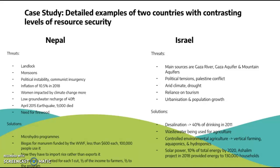For Israel: main water sources are the Gaza River, Gaza Aquifer, and mountain aquifers. Threats include the Israeli-Palestinian conflict creating management difficulties, an arid climate with drought, reliance on tourism which consumes food, water, and energy resources, and urbanization and population growth. Solutions: desalination provided 40% of drinking water in 2011; wastewater is reused for agriculture; controlled environmental agriculture including vertical farming, aquaponics, and hydroponics is in use; solar power accounts for 10% of total energy by 2020, including the Ashland project in 2018 which provided energy to 130,000 households.